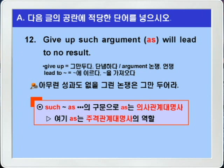'Give up such argument' — 그런 논쟁은 그만두어라 — 'blank will lead to no result', 어떤 결과에도 이르지 못할 — 아무런 성과도 없을 그런 논쟁은 그만두어라, 이런 말이죠. 선행사 argument 앞에 such가 있으니까 블랭크에는 의사관계대명사 as가 들어가면 되겠습니다. 여기 as는 will lead의 주어 역할을 하는 주격 의사관계대명사가 되는 것이죠. 접속사 as가 such와 상관적으로 쓰여서 관계대명사로 사용된 경우를 볼 수 있습니다.